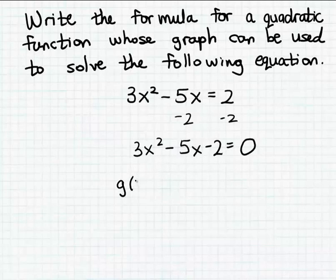So if we can find the x-intercepts to the function—I'm going to call the function g(x) = 3x² - 5x - 2—